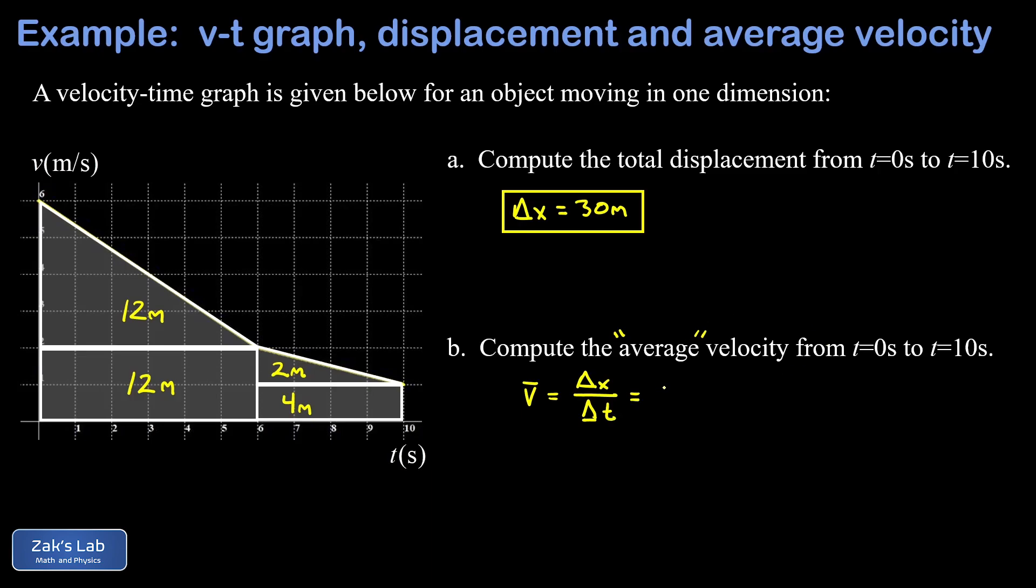All we have to do is plug in the displacement from part A—that was 30 meters positive—and then divide by how long it took, which was 10 seconds. We arrive at this nice round answer of three meters per second for the average velocity.